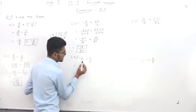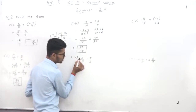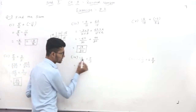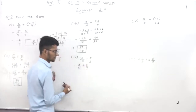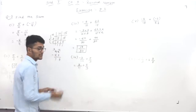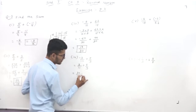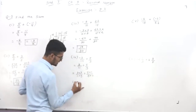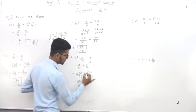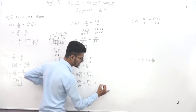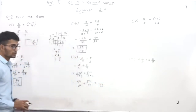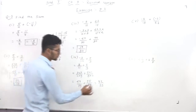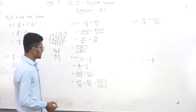The next question has minus and minus together — two minuses cancel, giving just 3/11. So the expression becomes 3/11 + 5/9. The denominators are different; the LCM of 11 and 9 is 99. Converting: 3/11 becomes 27/99 and 5/9 becomes 55/99. Then 27 + 55 = 82, so the answer is 82/99.